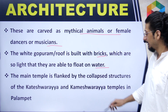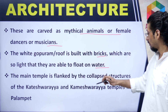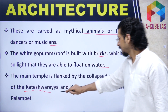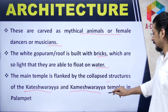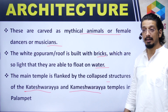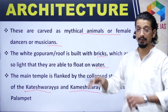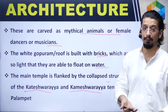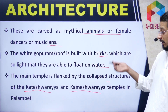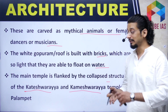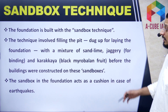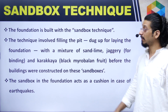The main temple has a complex structure with surrounding temples like Kateshwarya and Kameshwarya temples. These surrounding temples were subject to many raids — Alauddin Khilji also conducted raids — and there was plunder and earthquake damage in this area, so those structures around the main temple were affected.